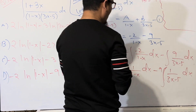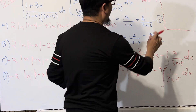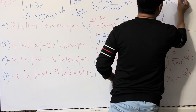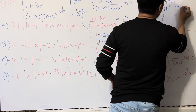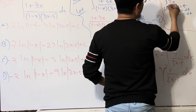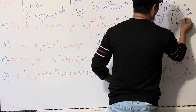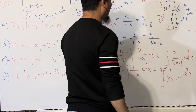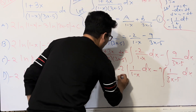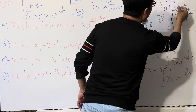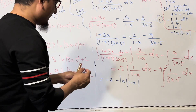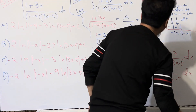Using substitution t = 1 - x: the integral of 1/(1 - x) dx becomes integral of (1/t)(-dt) = -ln|t| = -ln|1 - x|. Therefore the first part gives -2 × (-ln|1 - x|) = 2 ln|1 - x|.